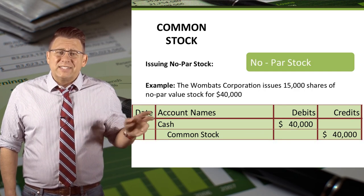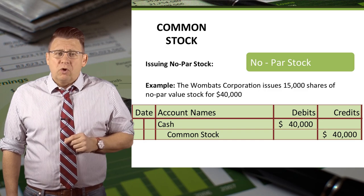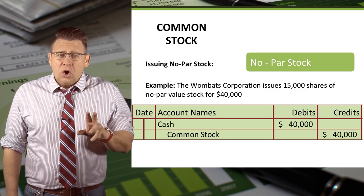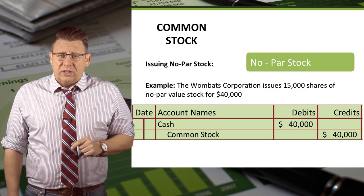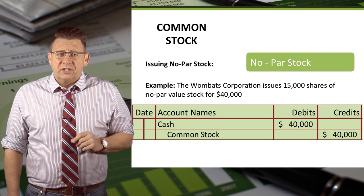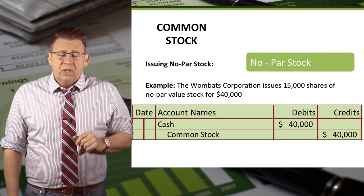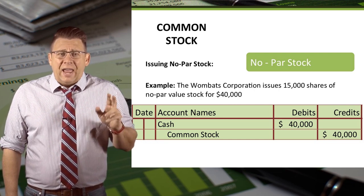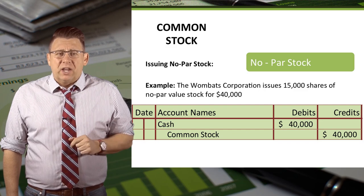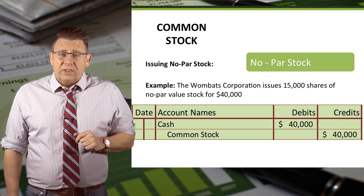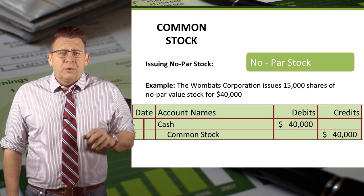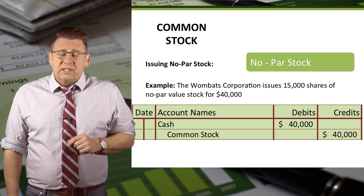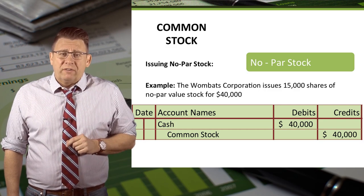In this next example, the Wombat Corporation issues 15,000 shares of no par value stock for $40,000. Cash is debited for $40,000 and common stock is credited for $40,000. There is no other account used when the stock is no par value.